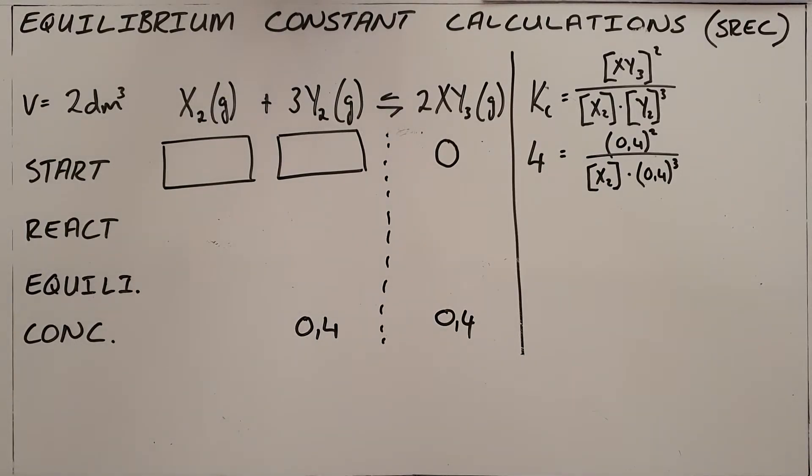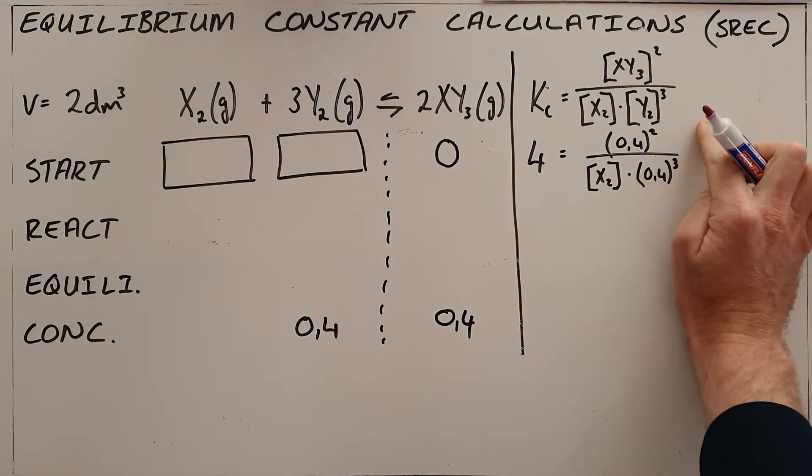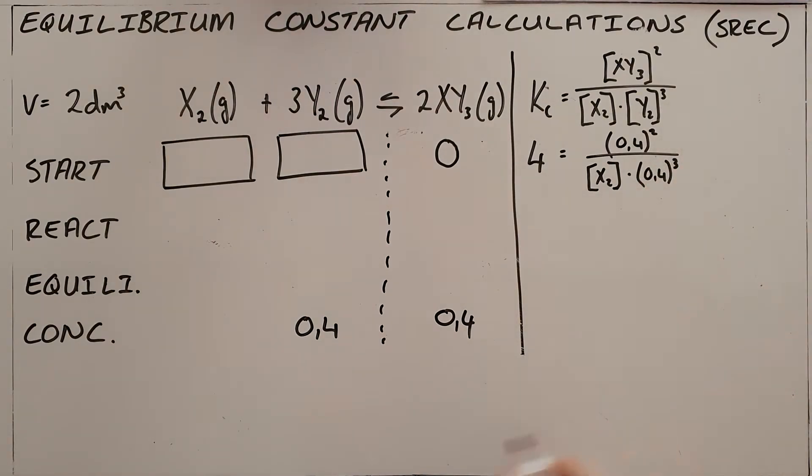Another type of equilibrium constant calculation is one in which you are required to use your equilibrium constant to find values that you would be able to use in your table to find your final answer.